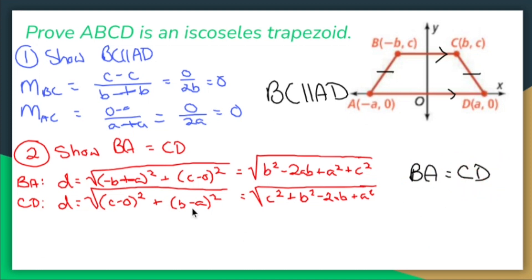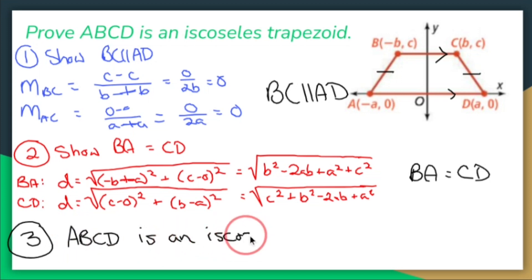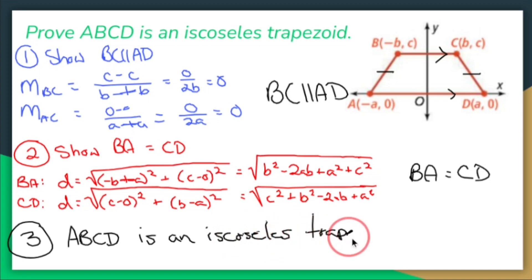Since BC is parallel to AD and BA equals CD, ABCD is an isosceles trapezoid. That's coordinate geometry — you're not setting up a two-column proof. You're just showing the math you need to show to prove these figures are exactly what they're claimed to be.